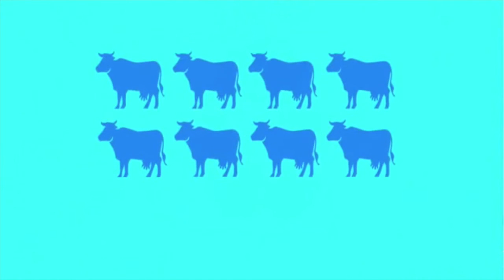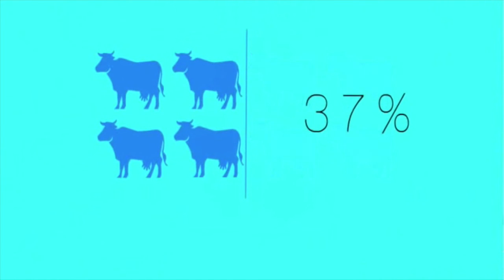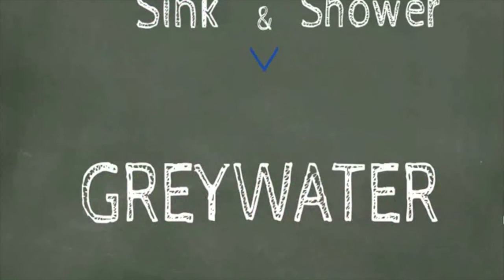For example, if we reduce the consumption of meat by half, the U.S. dietary requirements of water would drop by 37%. We can also reuse and recycle the water by using wastewater from sinks and showers.